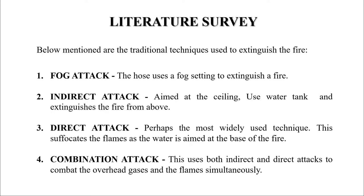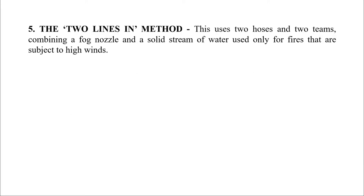The second technique is indirect attack, aimed at the ceiling using a water tank to extinguish the fire from above. The third technique is direct attack — perhaps the most widely used technique, which suffocates the flames as water is aimed at the base of the fire. Combination attack uses both indirect and direct attacks to combat overhead gases and flames simultaneously. The last technique is the two-line method, which uses two hoses and two teams combining a fog nozzle and a solid stream of water, used only for fires subject to high winds.